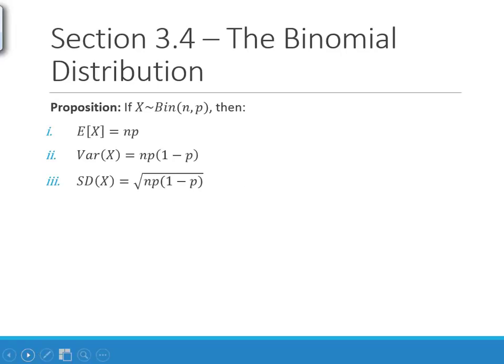A few more facts for the binomial distribution. Without deriving them, for a binomial random variable: the expected value is n times p; the variance is n times p times 1 minus p; and the standard deviation is the square root of that. These are very helpful facts in a number of settings.